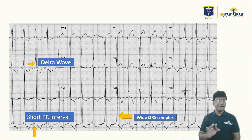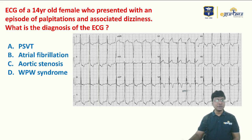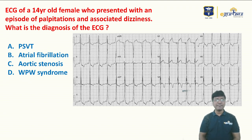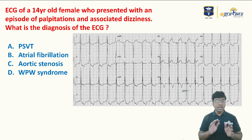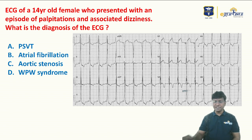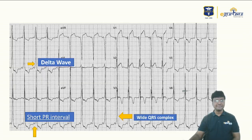These three abnormalities — short PR interval, wide QRS complex, and delta wave — are found in patients with WPW syndrome, that is Wolf-Parkinson-White syndrome. You should also be able to rule out the other options, so let me teach you that as well.